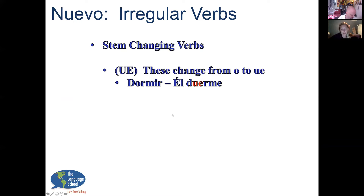Now, stem-changing verbs. Typically we have an O in the base, and we change it to UE. There may also be some with a U in the base that change to UE. For example, 'dormir' means to sleep, but when we conjugate it: 'él duerme' — he sleeps. So: yo duermo, tú duermes, él/ella/usted duerme, nosotros dormimos, ellos/ustedes duermen.